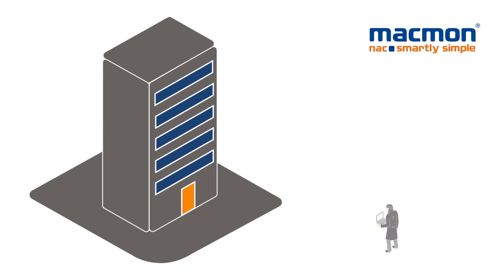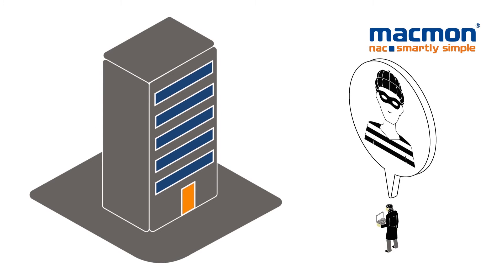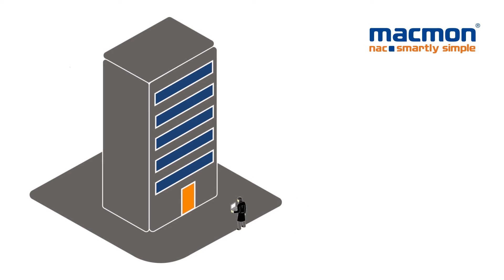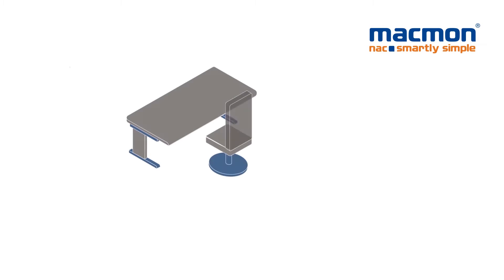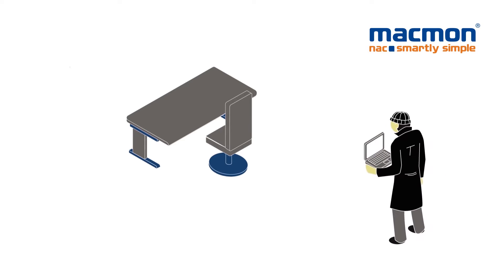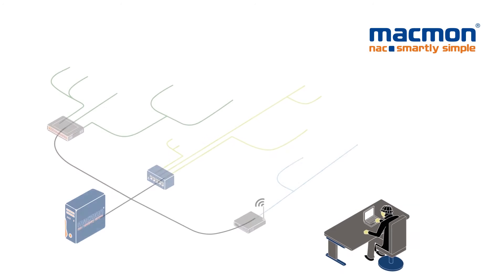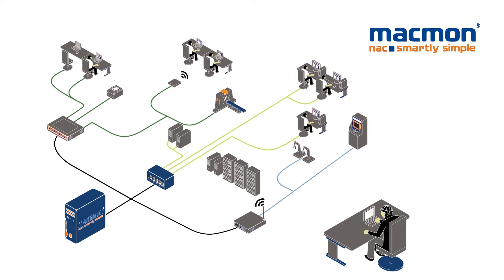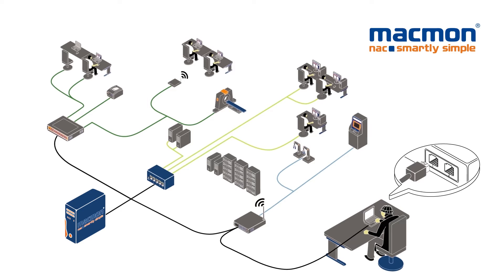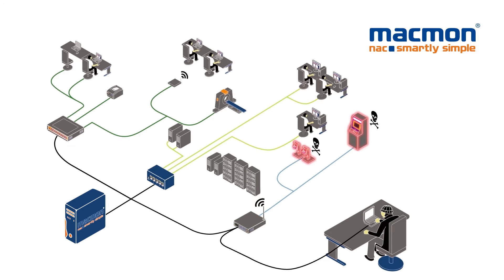NAC primarily prevents unauthorised persons from gaining access to your company using their personal devices. Regardless of whether this person is an intruder, an employee or a visitor, every system connected to the network is immediately recognised as a matter of priority. Communication between company switches and access points means that a complete overview of your LAN and WLAN is available at any time.